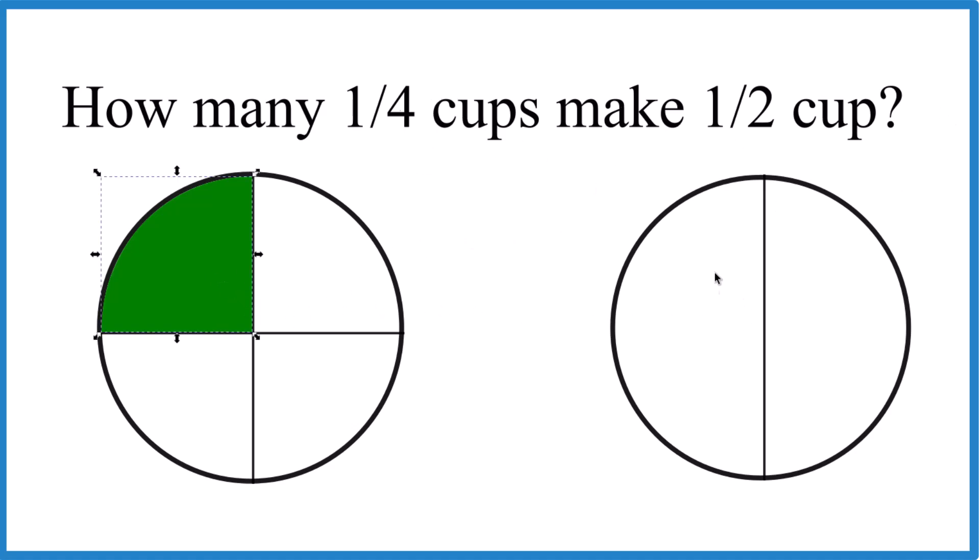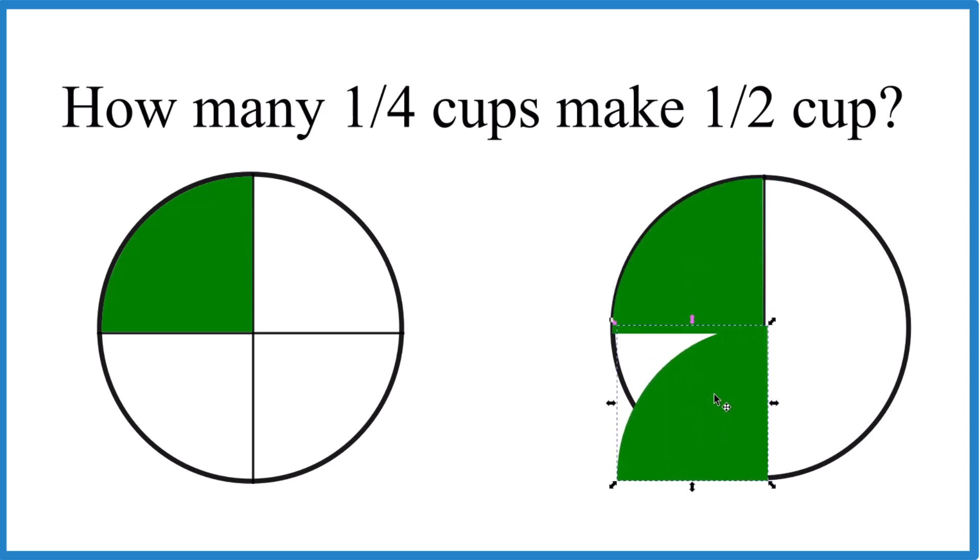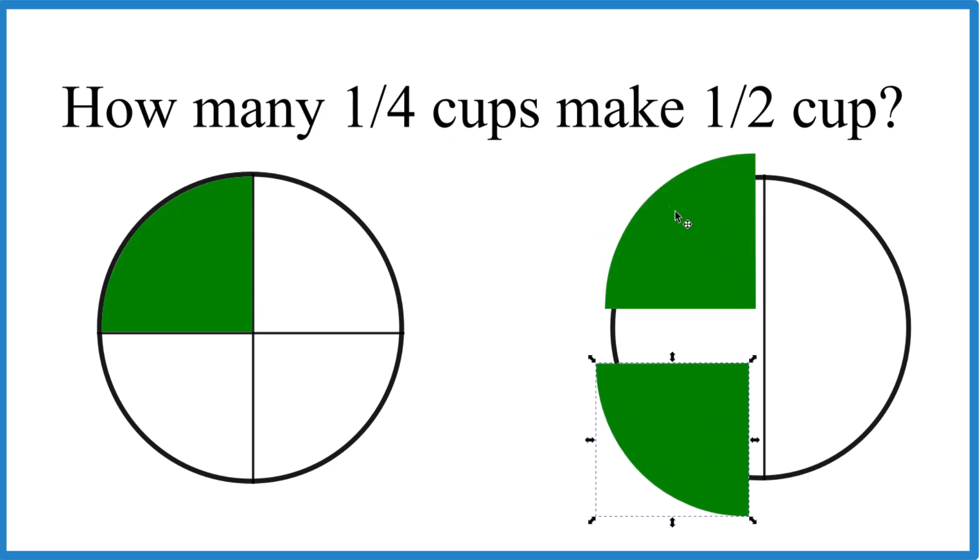We could take this, copy it, and put it here. So there's one fourth, and let's do it again. Put here, let's spin it. And we can see it takes two of these quarter cups here to make a half cup, one, two. So in answer to our question, it takes two one quarter cups to make a half cup.